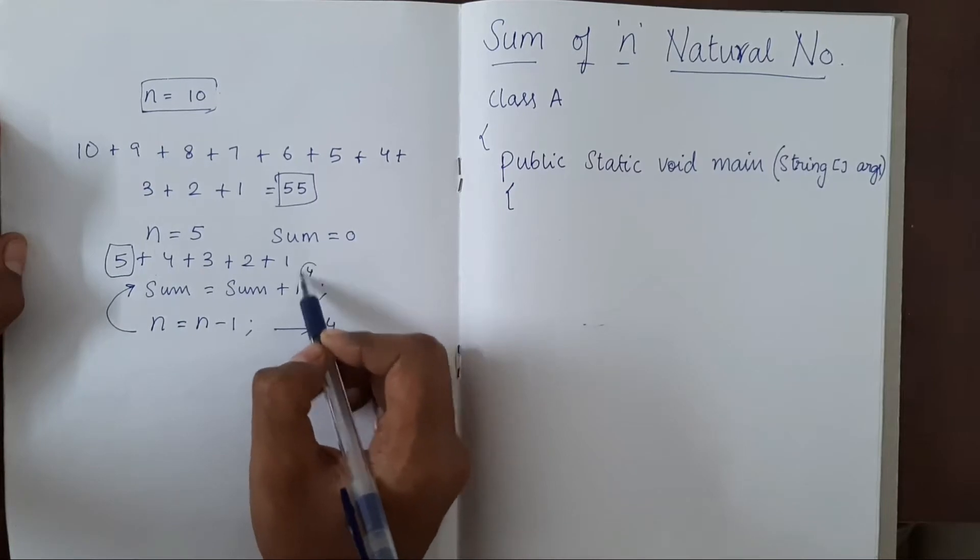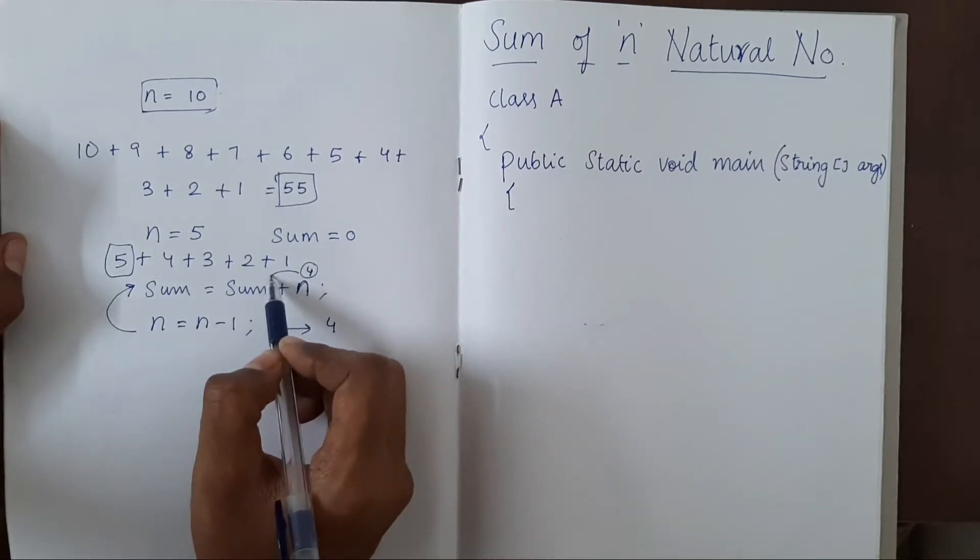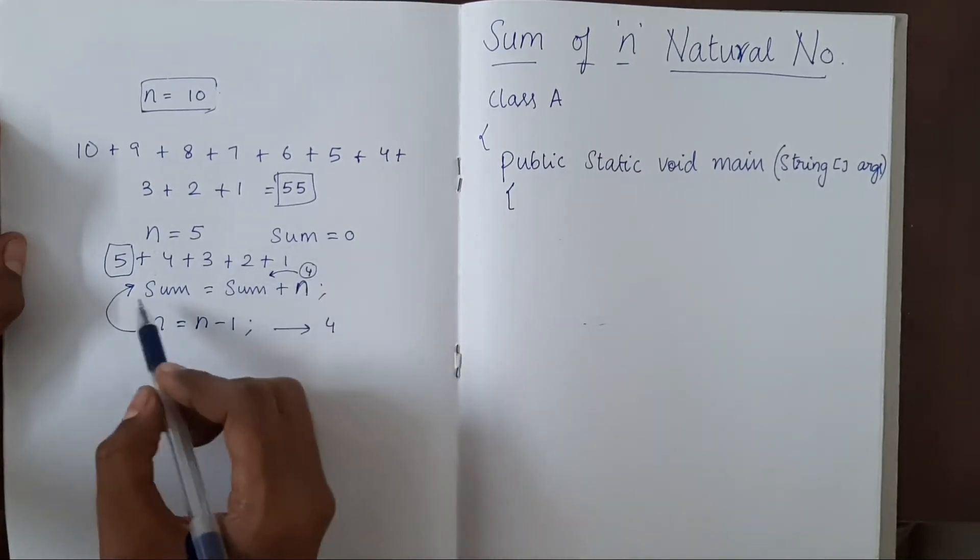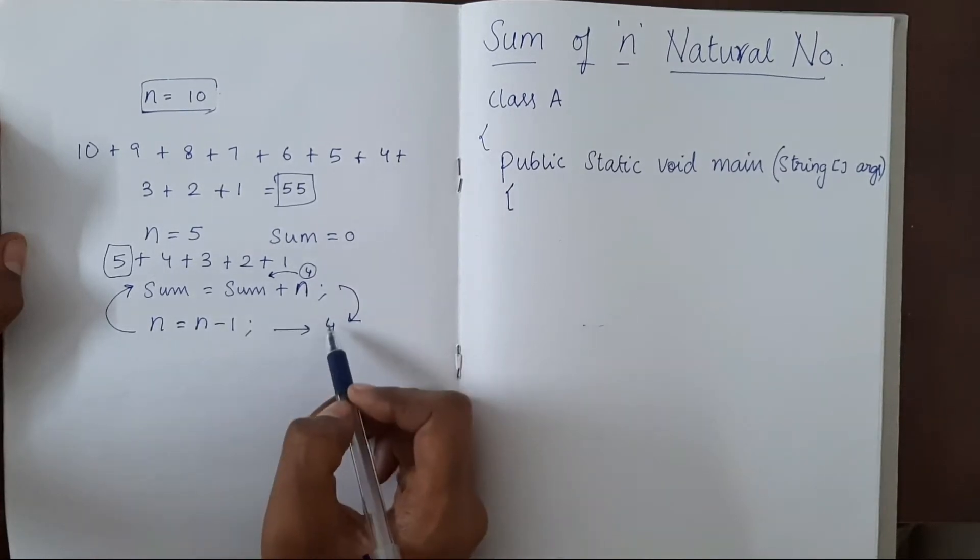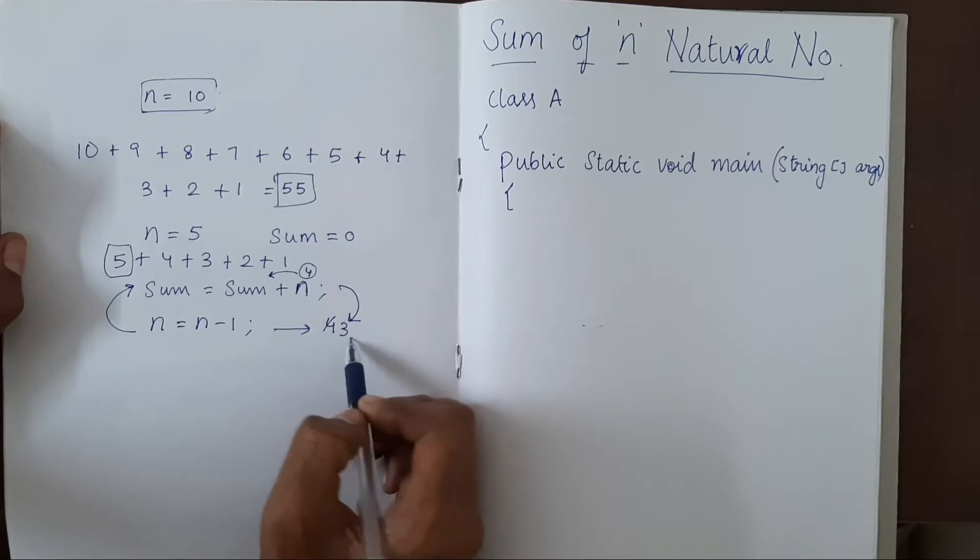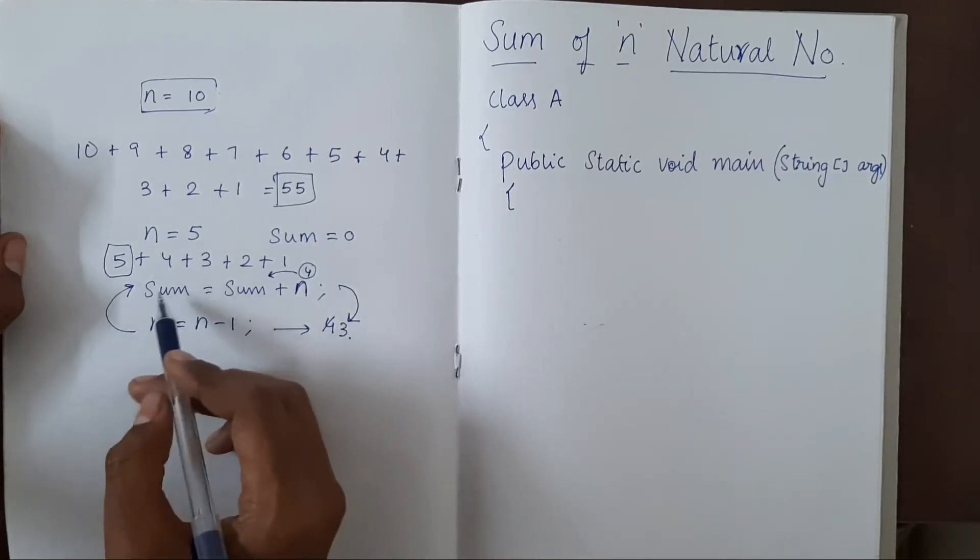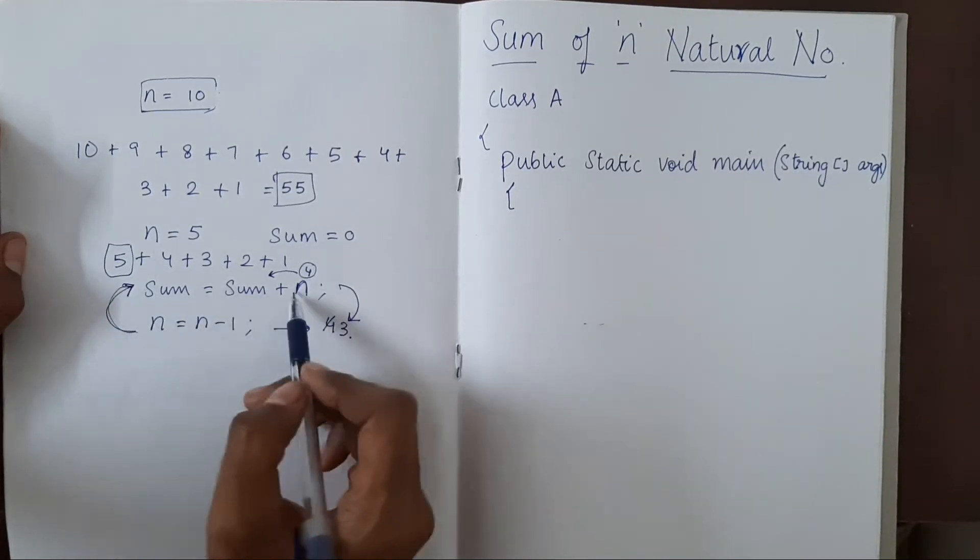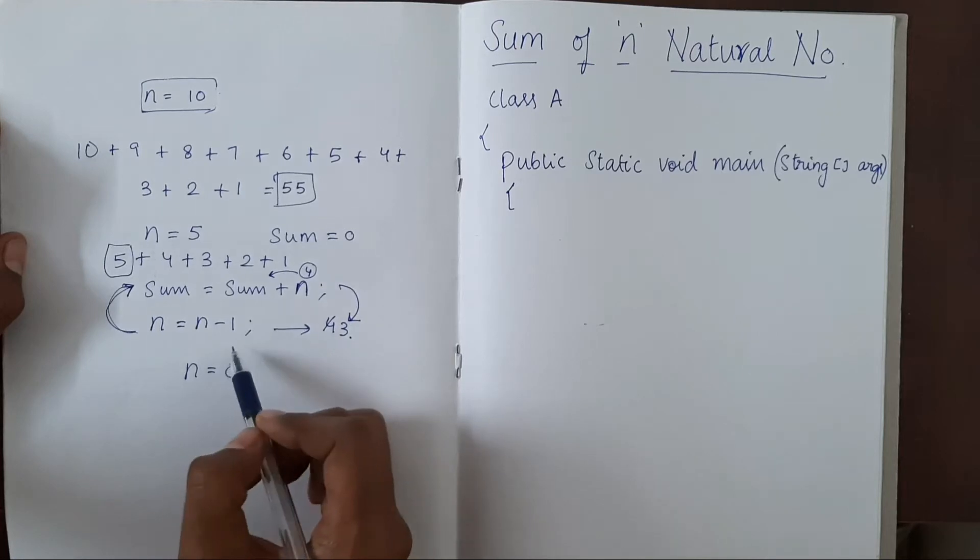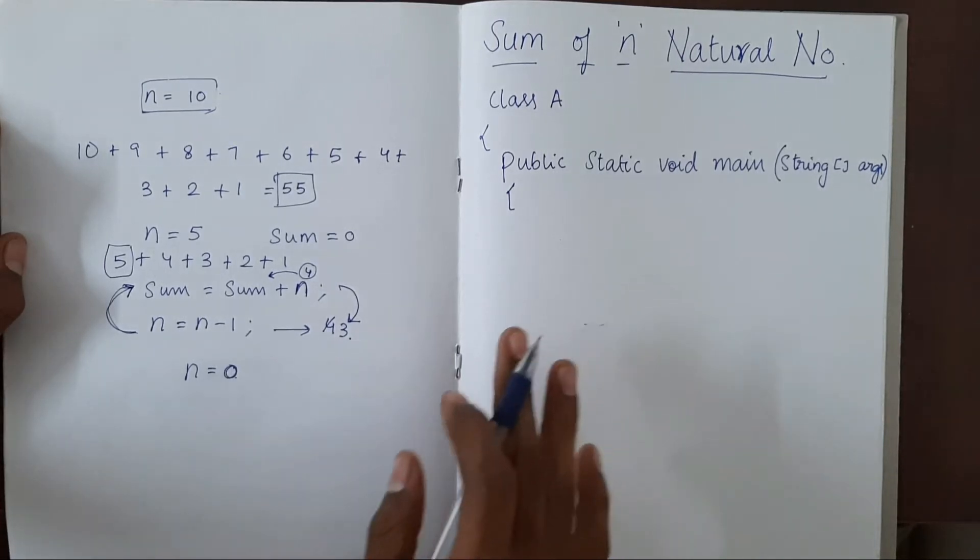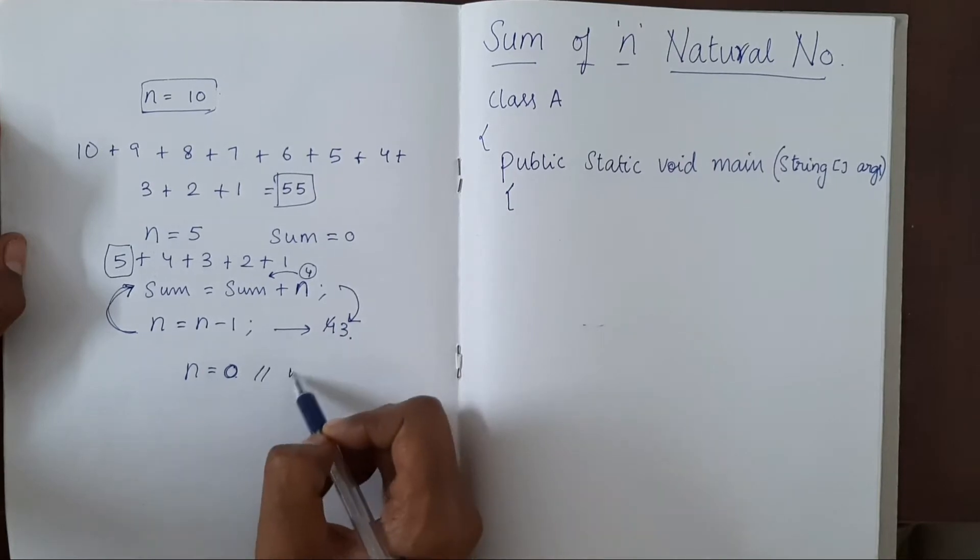This time n is 4, so 4 will be added to sum. Now I come down again. Now n equal to n minus 1, so n will become 3. And then we will go back in a loop. So at the end n will become 0. We are subtracting one each time. At one point n will become 0, and that's when we stop. So that is the condition for our while.